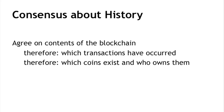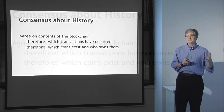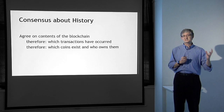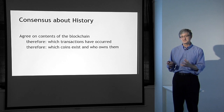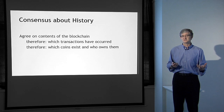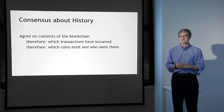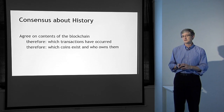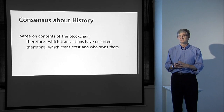The second form of consensus in Bitcoin is consensus about the history — that is, a consensus about what's in the blockchain and what's not, and therefore a consensus about which transactions have occurred. Once you have consensus about which transactions have occurred, what follows is a consensus about which coins, which unspent outputs exist, and who owns them. This consensus flows from the processes by which the blockchain is built and by which nodes come to consensus.